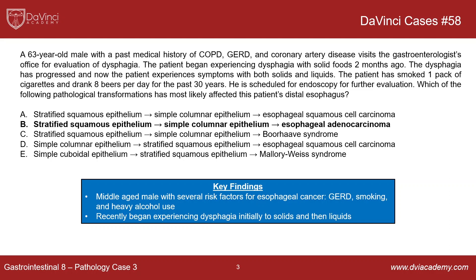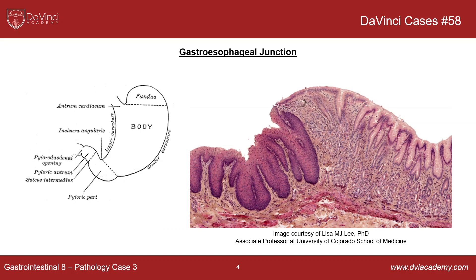The correct answer is choice B: stratified squamous epithelium transitioning to simple columnar epithelium, and then eventually into esophageal adenocarcinoma. This question requires knowledge of not only pathology, but also anatomy and some histology. We have a diagram showing the anatomy of the stomach and the esophagus joining with the gastric body, forming the gastroesophageal junction. This is not only an important anatomical transition point — it's also an important histological transition point.